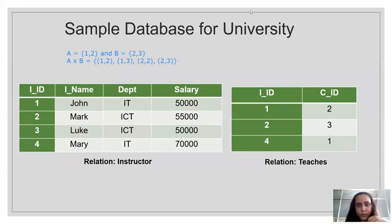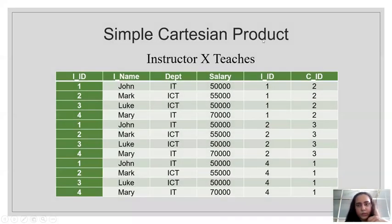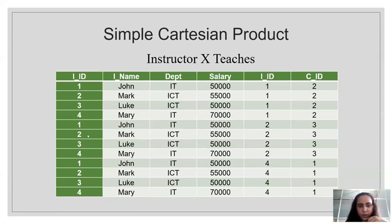Let me remove the annotation and you can see the resulting table. Instructor cross teachers gives this table. In the last two columns the values are being repeated — (1,2) comes four times, (2,3) comes four times, and (4,1) comes four times. Each time a different row from instructor is combined with it: instructor rows one, two, three, four repeat, combining with each row of teachers. This gives twelve rows total because instructor has four rows and teachers has three.